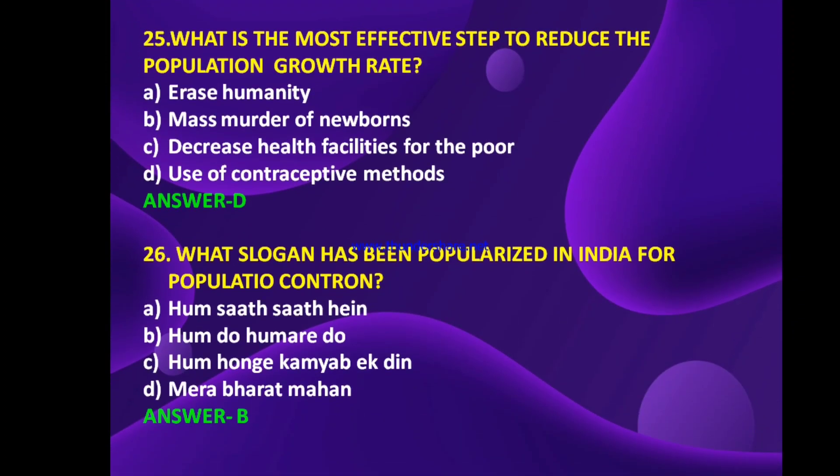What is the most effective way to reduce the population growth rate — erase humanity, mass murder of newborns, decrease health facilities for the poor, or use of contraceptive methods? The answer is D — this is the obvious answer — use of contraceptive methods.